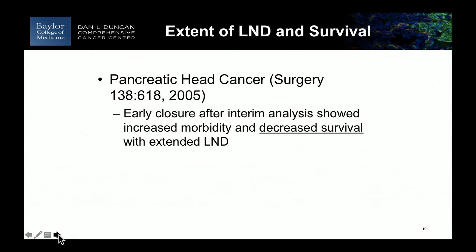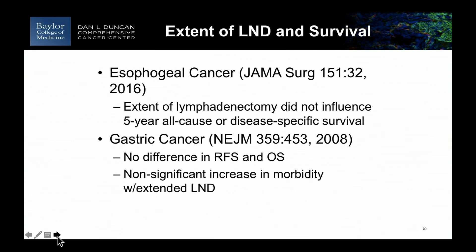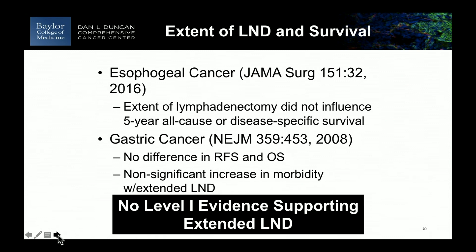This has been tested in a number of other organ-site cancers where retrospective data suggested a more extensive node dissection was associated with better outcomes. This was reported in pancreatic cancer and esophageal cancer — but when randomized clinical trials were done, none of those organ sites showed a benefit to extended node dissection, and sometimes even showed worse survival. An elegant Japanese study in gastric cancer also showed no difference. So there's no level-one evidence in these organ sites.